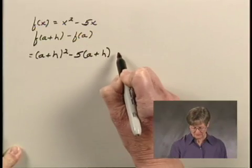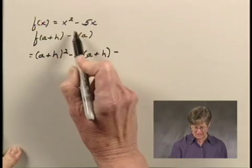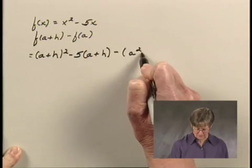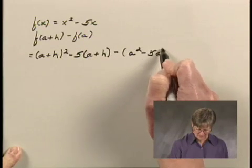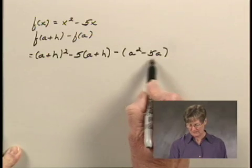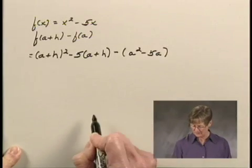And then we're subtracting f of a, so I'm substituting a for x, and we're subtracting then a squared minus 5a. Notice that we need to use parentheses to indicate that we're subtracting this entire expression, a squared minus 5a.